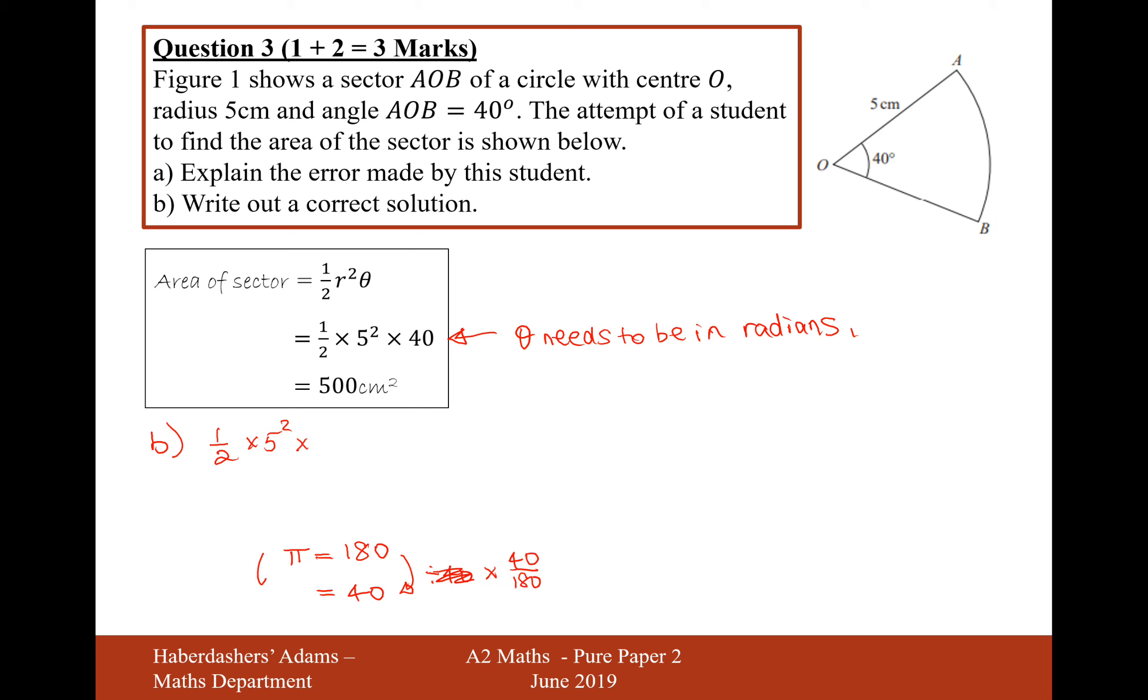So I'll do the same on this side here, times by 40 over 180. That's going to give me 4 over 18, 2 pi over 9. And you can think about it, if you do the same with 180, divide it by 9, you get to 20, and then times by 2, you get to 40.